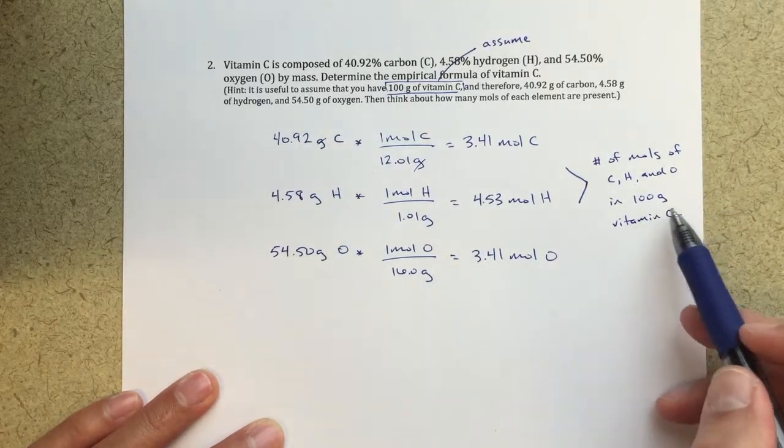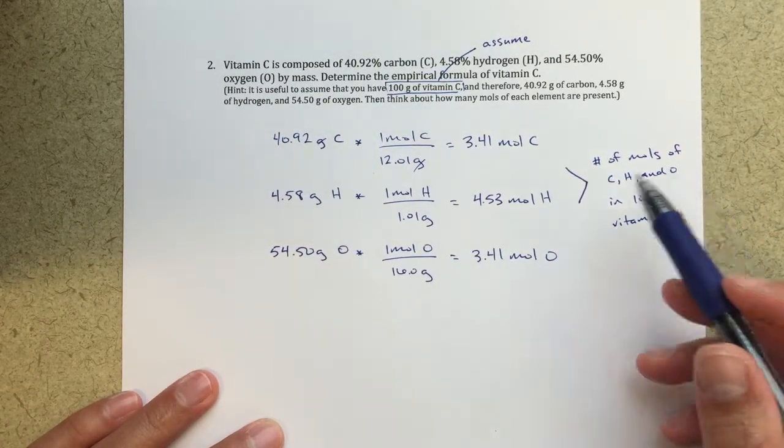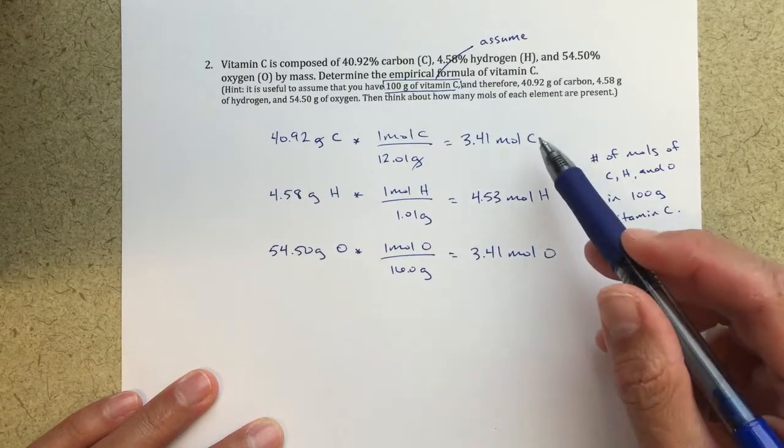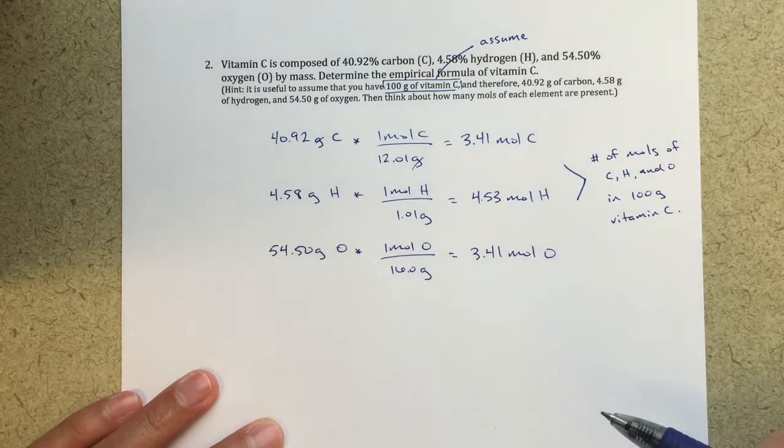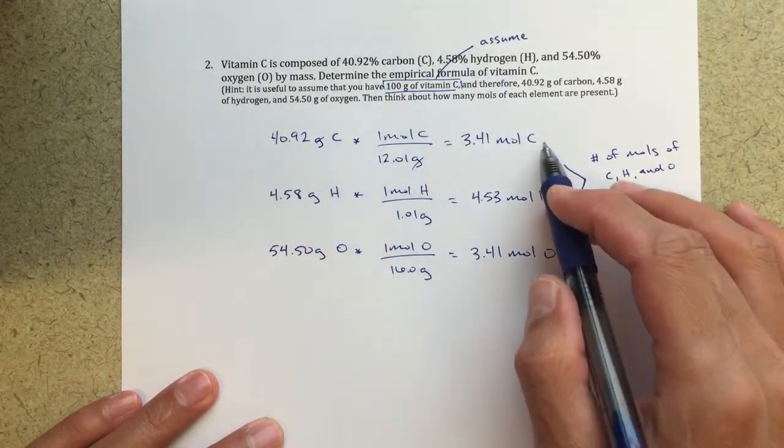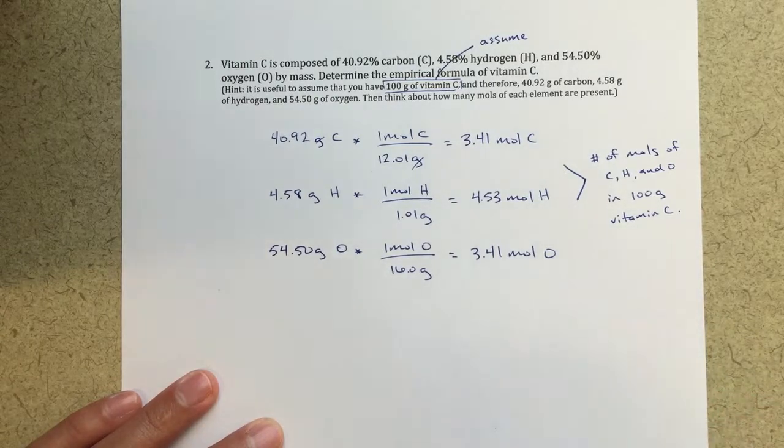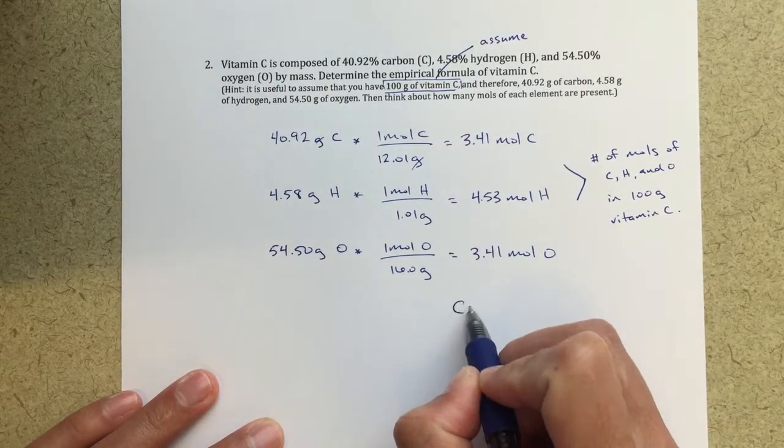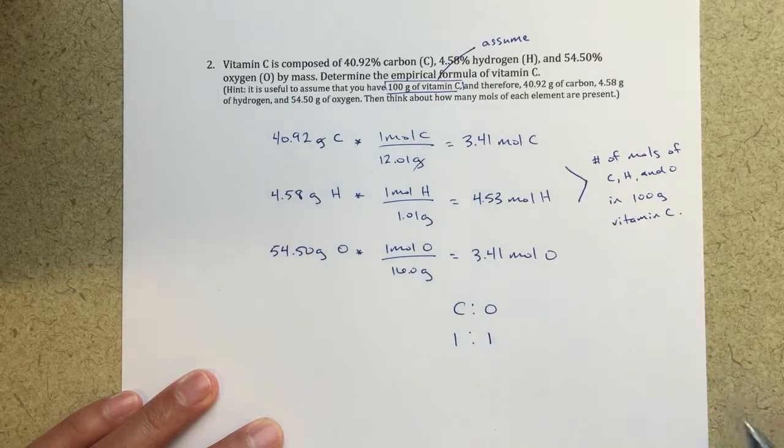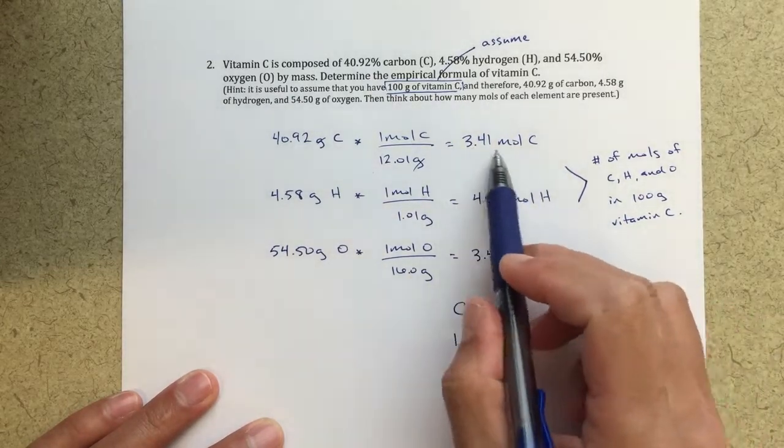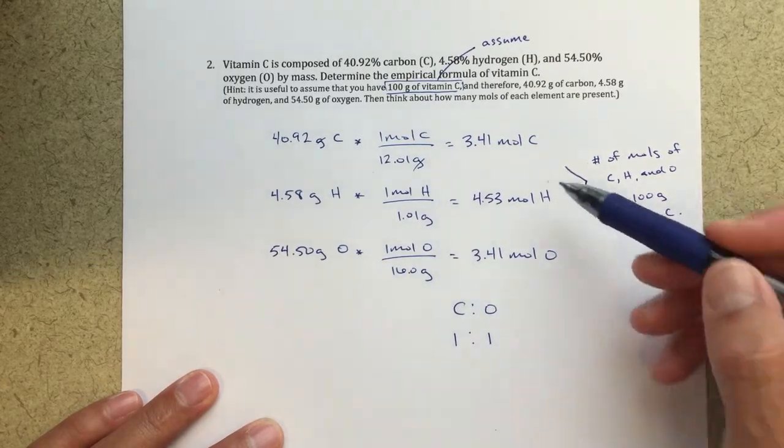It doesn't really matter how much vitamin C we're using because we're looking for the ratio of moles of carbon to hydrogen to oxygen. Now the last step is to translate this information into an empirical formula. Right away, I can see the ratio of carbon to oxygen is one-to-one. For every 3.41 moles of carbon, I have 3.41 moles of oxygen. So the question is, what's the ratio of carbon to hydrogen?